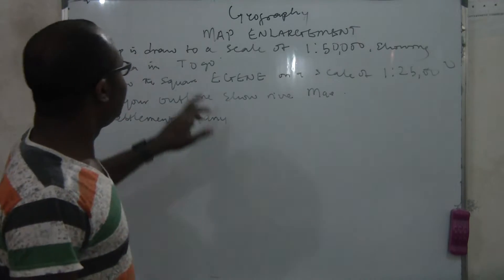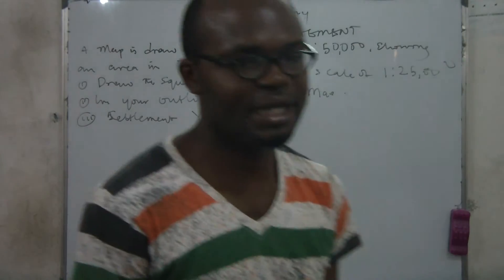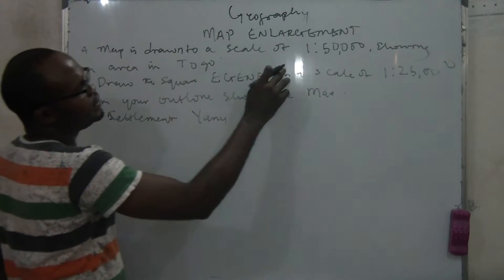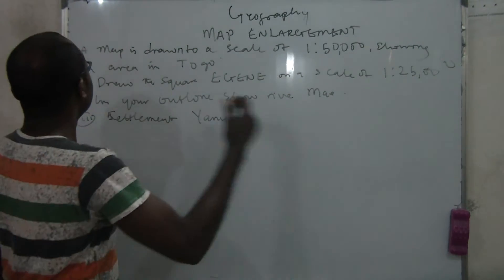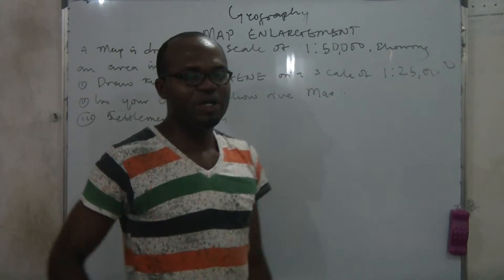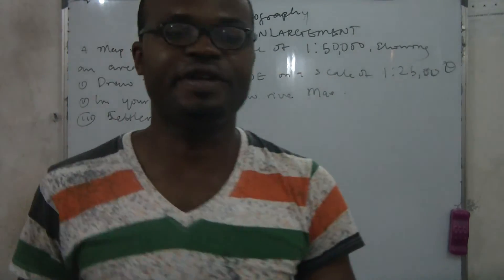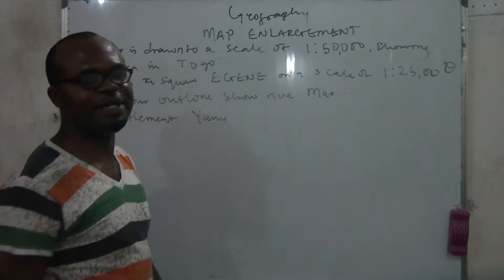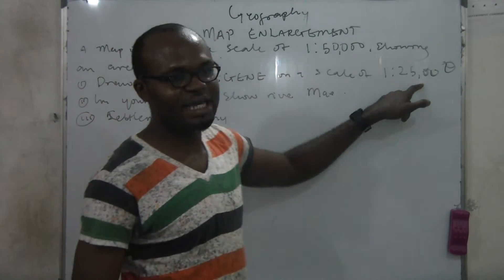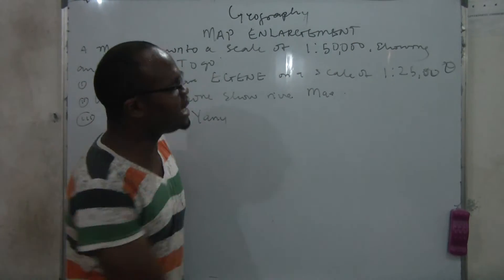This is a map enlargement exercise. You are given that a map is drawn to a scale of 1:50,000 showing an area in Togo. Now you are expected to draw this same map with the scale of 1:25,000. What are you expected to do — is it reduction or enlargement? It is enlargement because the denominator of the given is bigger than the denominator of what is expected.